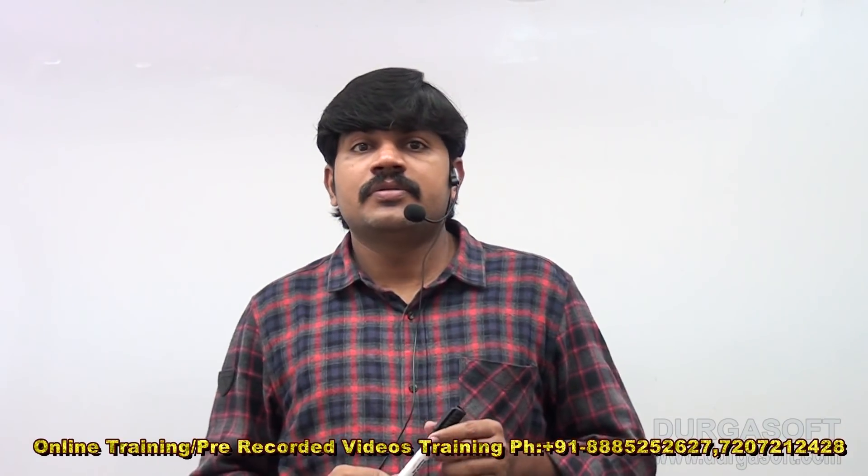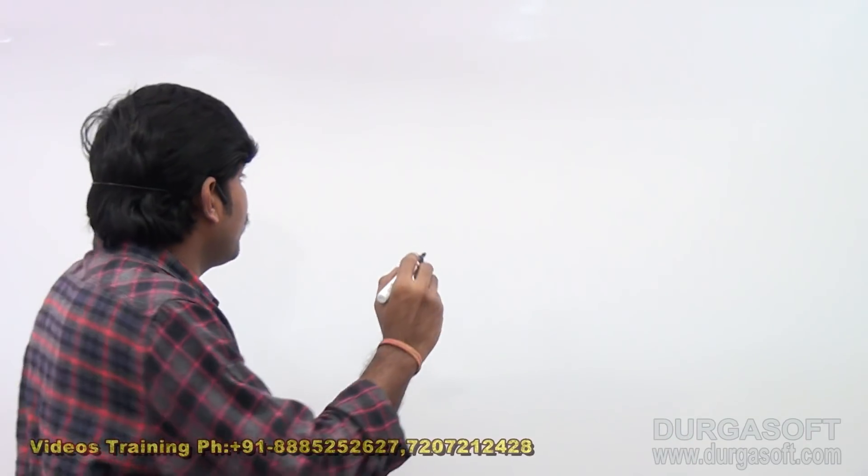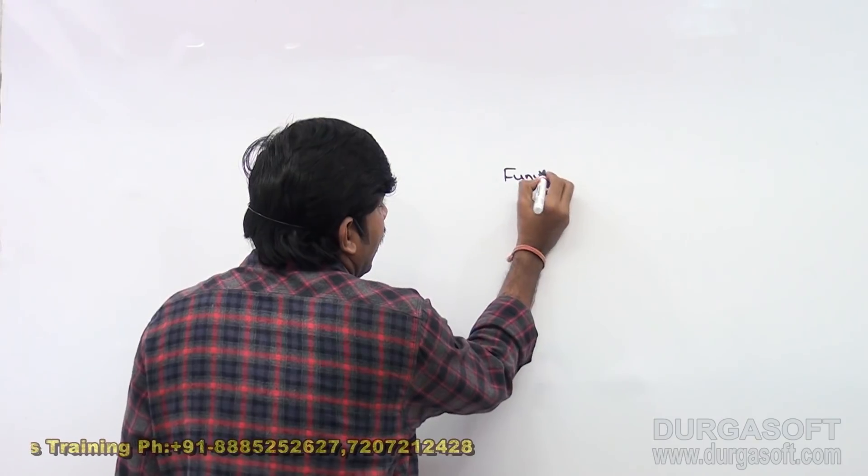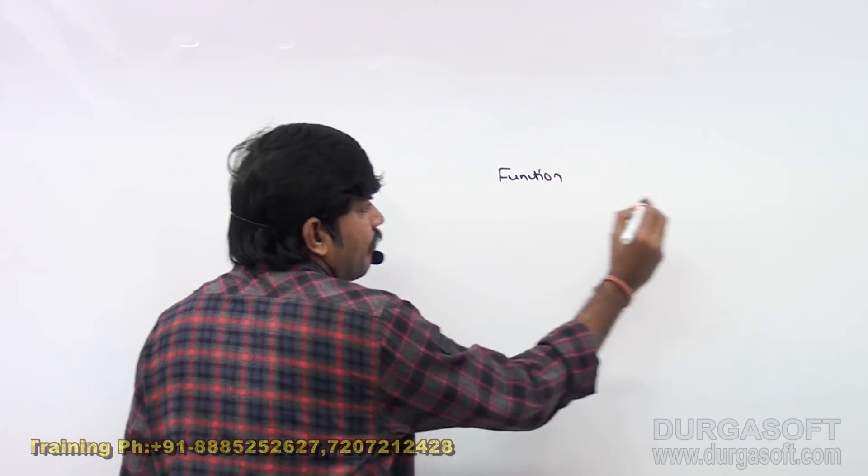In the last videos we covered about unary operator and the primitive versions of unary operator. Now the next topic is binary operator. When should we go for binary operator? Do you know what is the difference between normal function and bifunction?